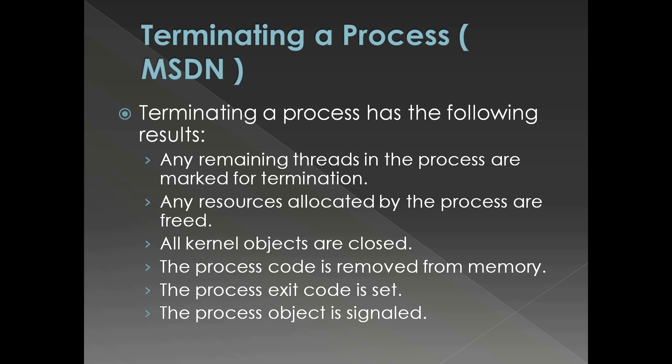When a process is terminated: any remaining threads in the process are marked for termination, any resources allocated by the process are freed, all kernel objects are closed, all DLLs are removed from memory, the process exit code is set, and the process object is signaled. So if anyone is waiting for that process to terminate, they get that signal from the process object.